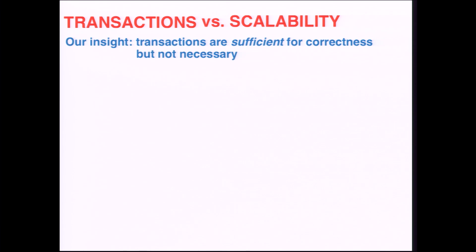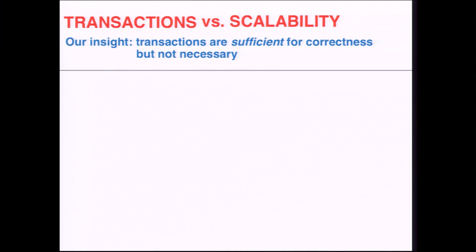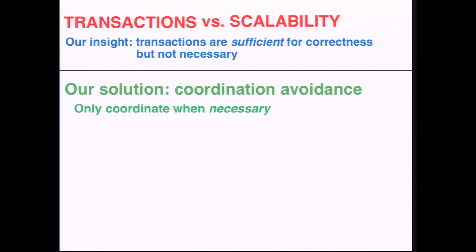So if there's this dichotomy between correctness and scalability in the popular conception of databases today, we want to challenge this and say it's not really correctness versus scalability — the problem is really this transactional abstraction versus scalability. Our insight is that transactions are sufficient for correctness, that is, isolating users is correct, but we don't always need that perfect isolation. Instead, we'll opt for what I'll call coordination avoidance, where we coordinate only when strictly necessary for application-level correctness. This will give us correctness and scalability.